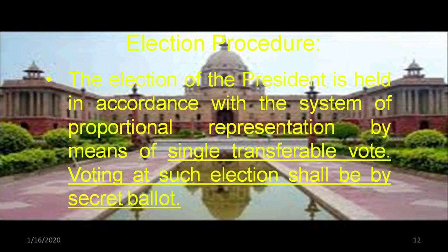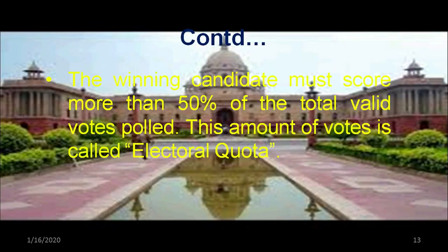The presidential election is held in accordance with the system of proportional representation by means of a single transferable vote, and the voting is done by secret ballot. It is not a direct election but an indirect election. A winning candidate must score more than 50 percent of the total valid votes polled — this amount is called the electoral quota. Only when more than 50 percent of total valid votes are polled in his favour does he become president of India.